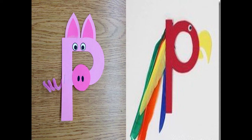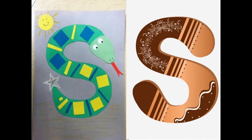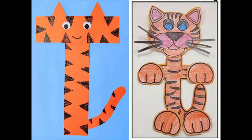So, letter P says P. Letter P says P. Letter S says S. S says S. And T says T. T says T.